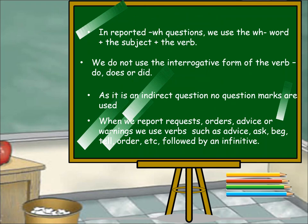In reported WH questions, we use the WH word plus the subject plus the verb. We do not use the interrogative form of the verb — do, does, or did. As it is an indirect question, no question marks are used. For example: He said to her, 'What are you doing?' When we change into indirect speech, it becomes: He asked her what she was doing.